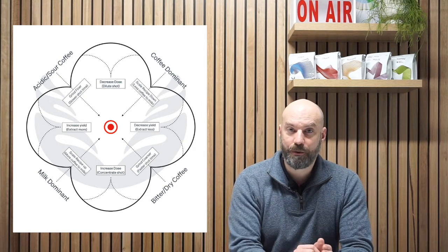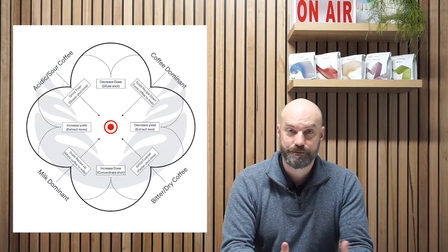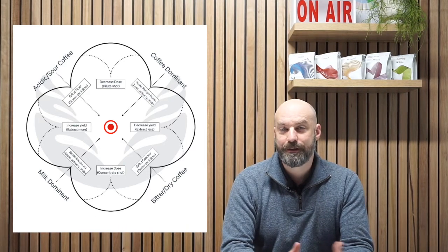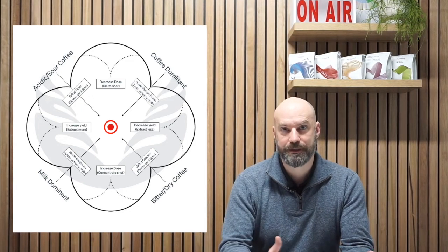The other two cardinal points are milk dominant and coffee dominant, meaning that the milk is too strong or the coffee is too weak, or the coffee is too strong and there's not enough milk sweetness to balance that drink.